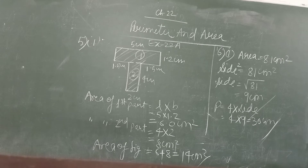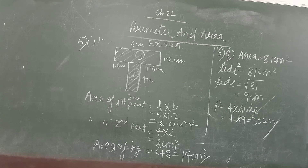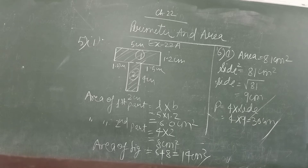In the seventh question, a floor measuring 7 metres by 2.8 metres is to be covered with tiles measuring 35 centimetres squared. How many tiles will be needed? First, make the units the same — convert 7 metres to 700 centimetres and 2.8 metres to 280 centimetres. Get the area by multiplying L into B, then divide it by the area of one tile.